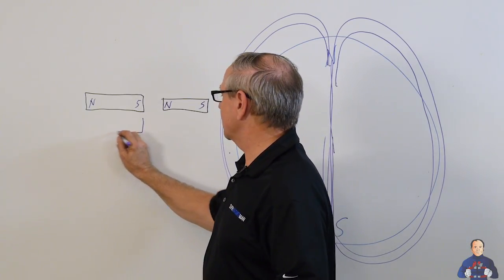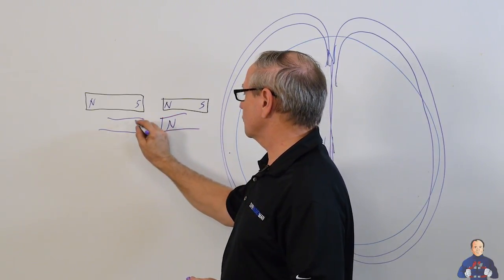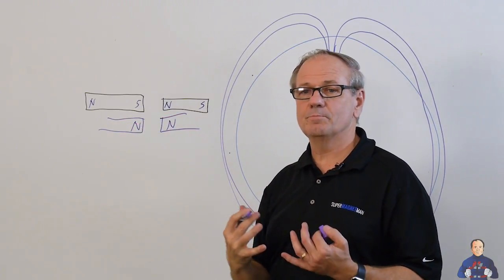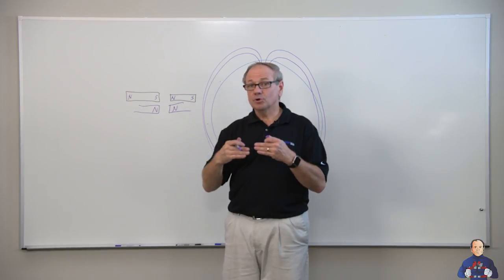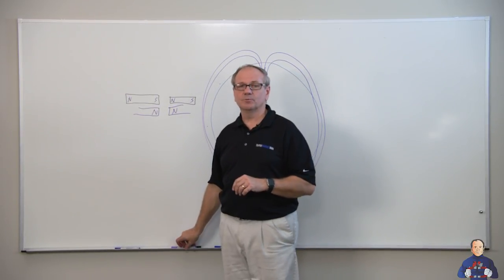If I have a magnet where I have a north pole against a north pole, these repel. That means they push away. I wanted a way to make this easier for people to understand.